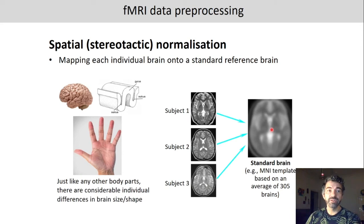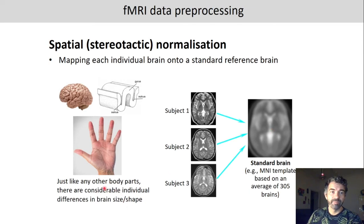Spatial or stereotactic normalization refers to the process of mapping each individual brain onto a standard reference brain. Just like any other body part, there are considerable individual differences in brain size and shape — the brain looks very different from participant to participant. So the question is: how do we align these brains?